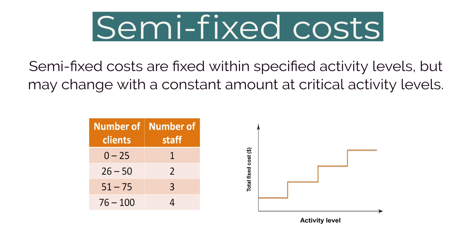Next, we move on to semi-fixed costs, also known as step-fixed costs. These costs are fixed within a relevant range, but change by a constant amount at critical activity levels. For instance, Candy might run her coffee shop with one staff member serving up to 25 clients. When clients increase to between 26 and 50, she needs 2 staff members; when clients increase to between 51 and 75, she needs 3 staff members, and so on. I hope this video on basic cost concepts was useful to you. Please feel free to email me if you have any questions. Thank you.